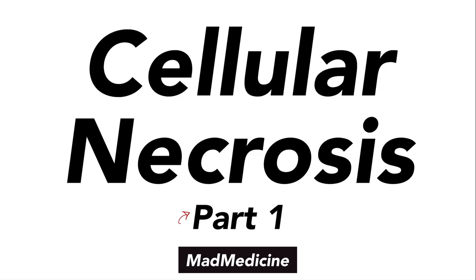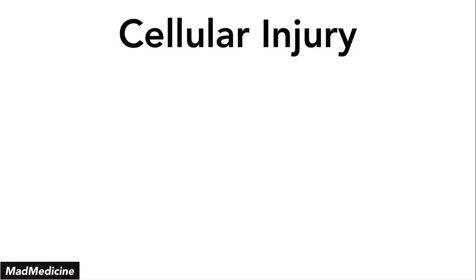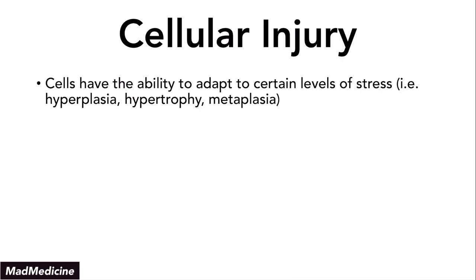Let's dive right in by first recapping cellular injury. Everything from this point is coming from a previous lecture, so definitely check that out. Essentially, what you need to know on a TLDR basis of cellular injury is that your cells are very resilient. They are able to adapt to certain levels of stress, and they have come up with different mechanisms to handle that stress, such as hyperplasia, hypertrophy, and even metaplasia.